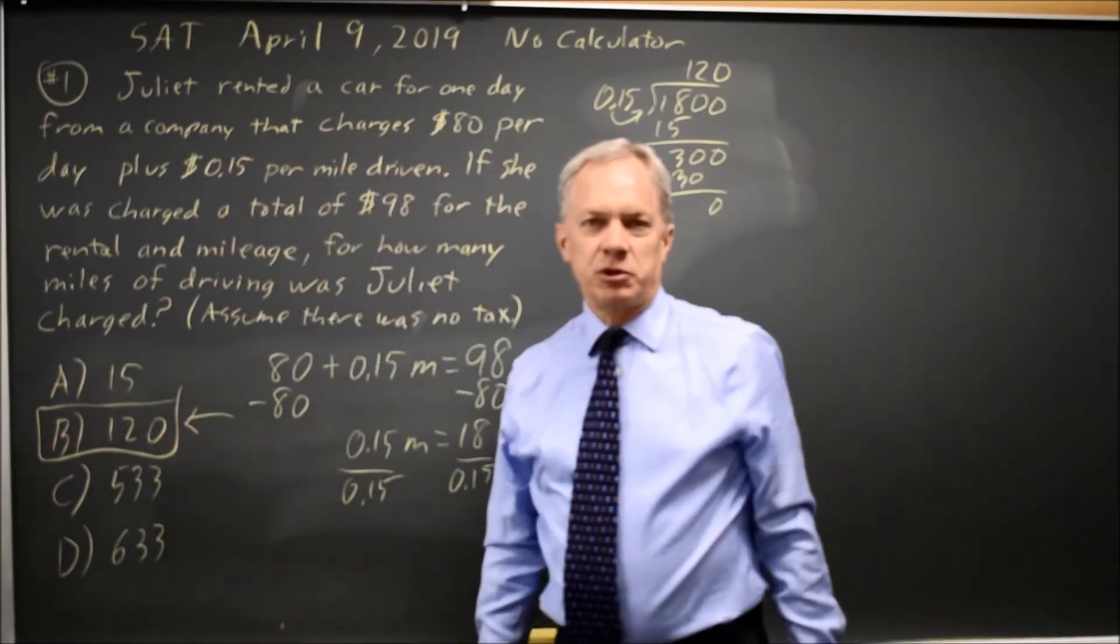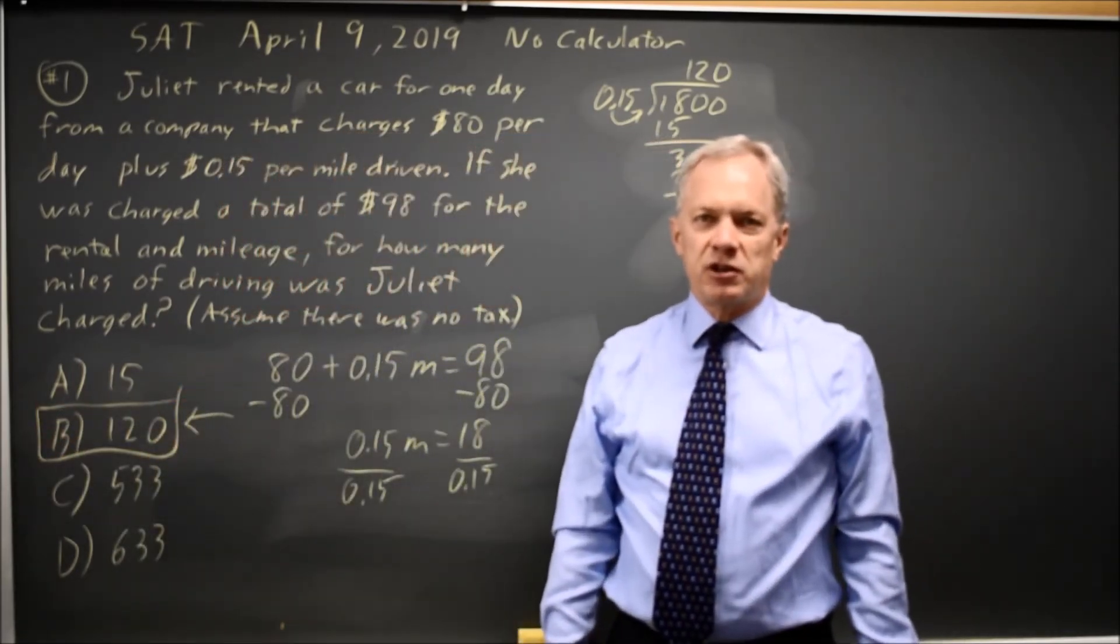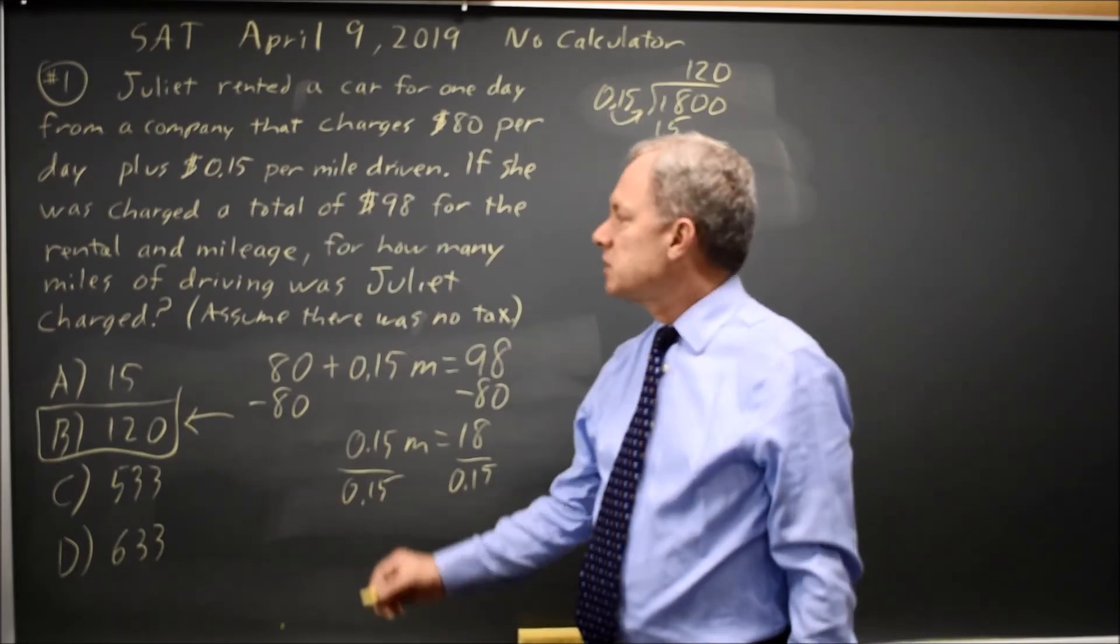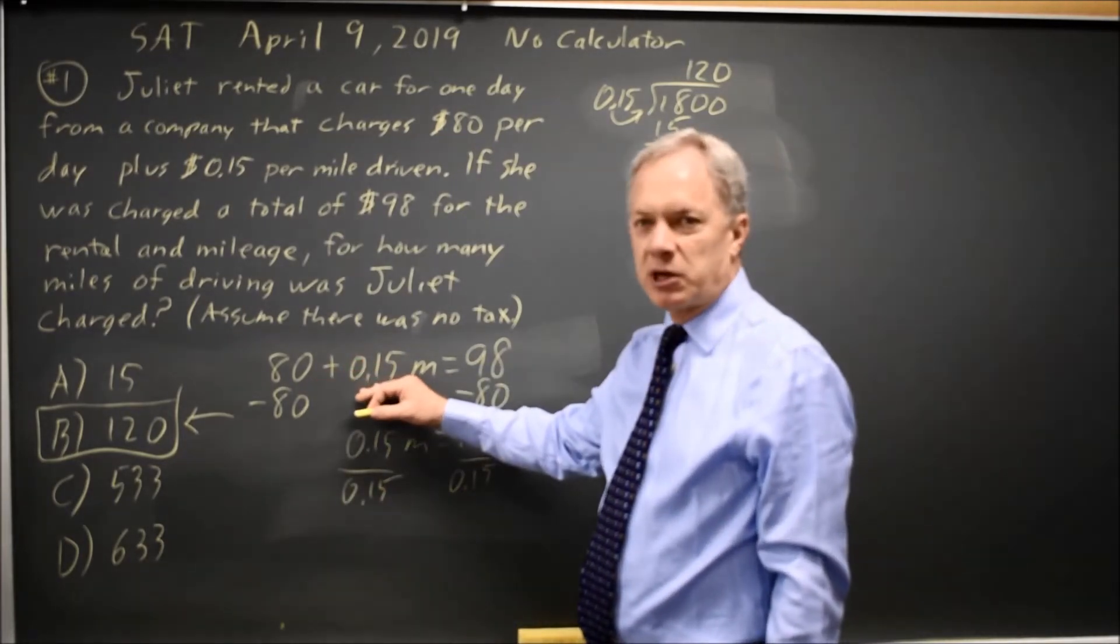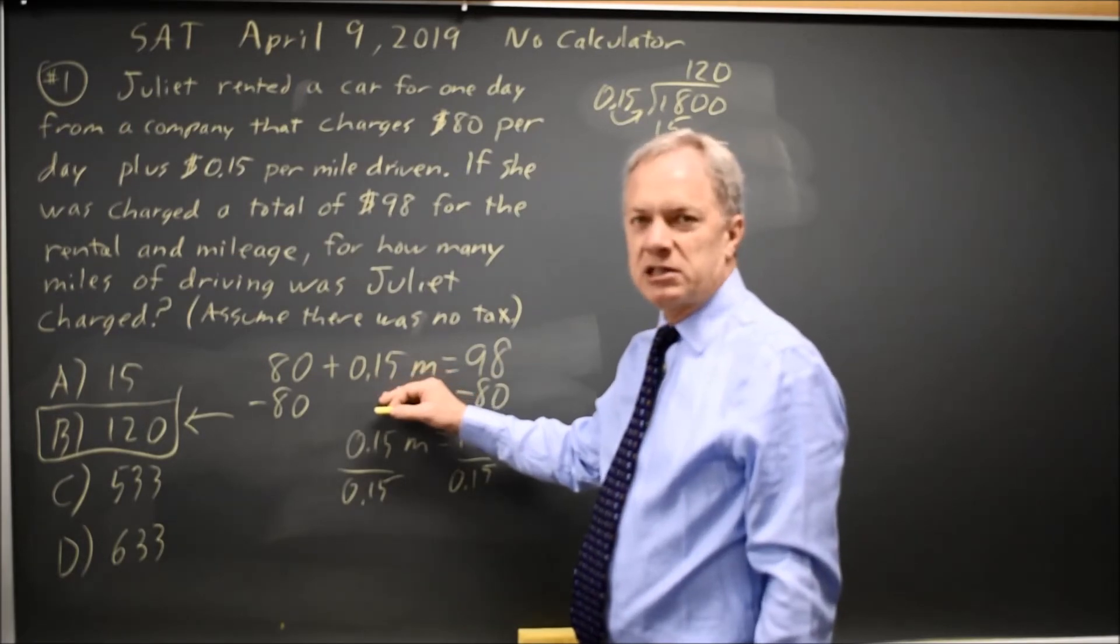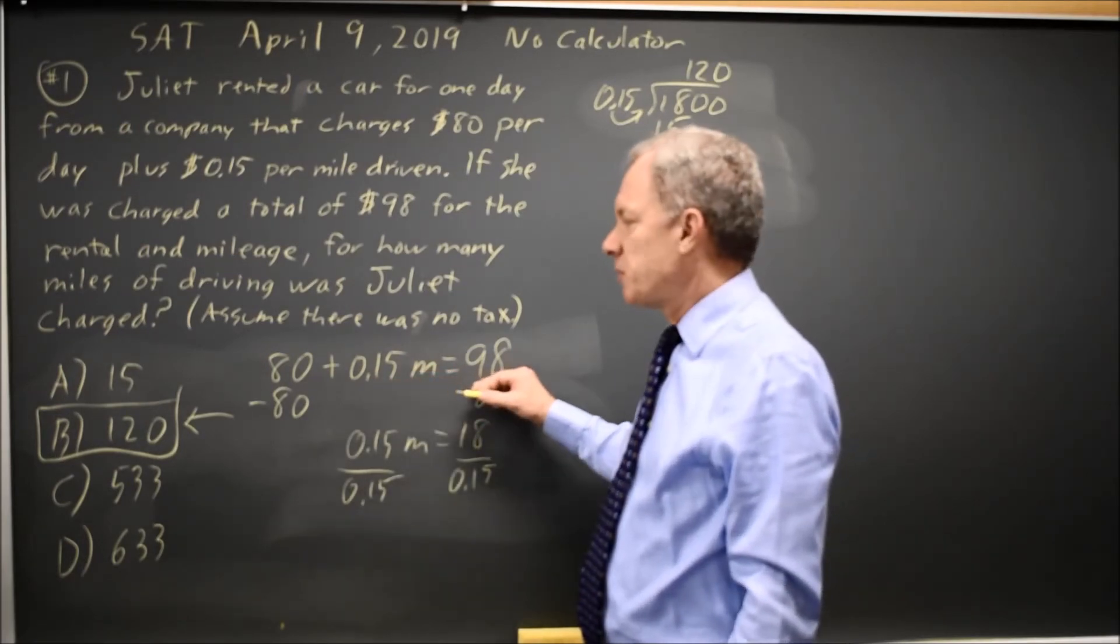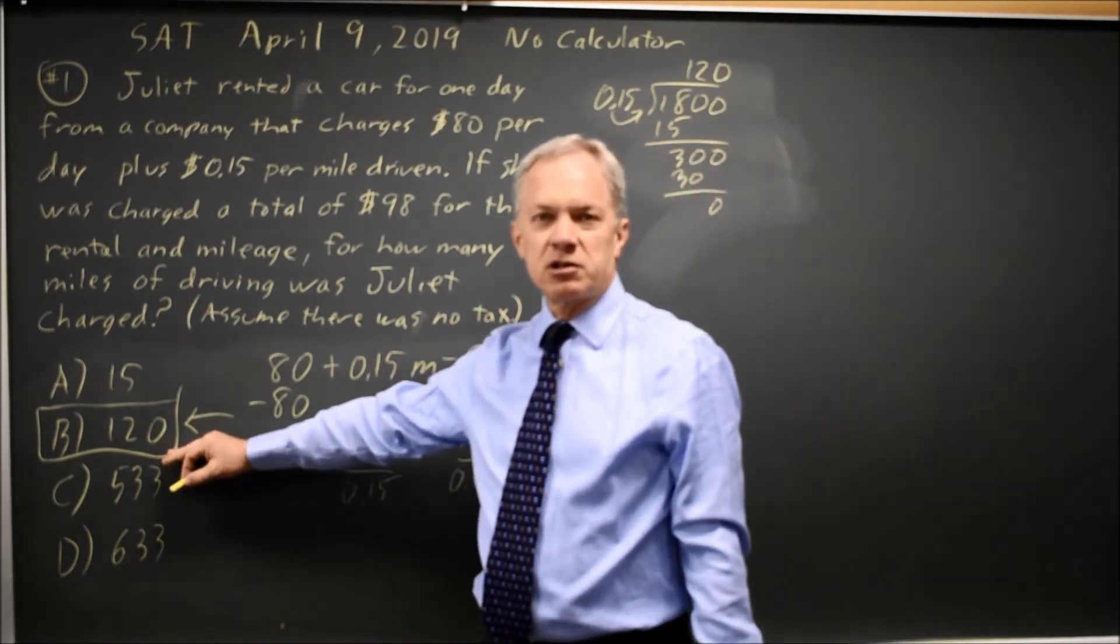The correct answer would be choice B. Alternatively, you could solve this by estimation. If the price is 80 plus 15 cents per mile, at 100 miles, it's 80 plus 15 is 95, is about 98, so the correct answer is about 100.